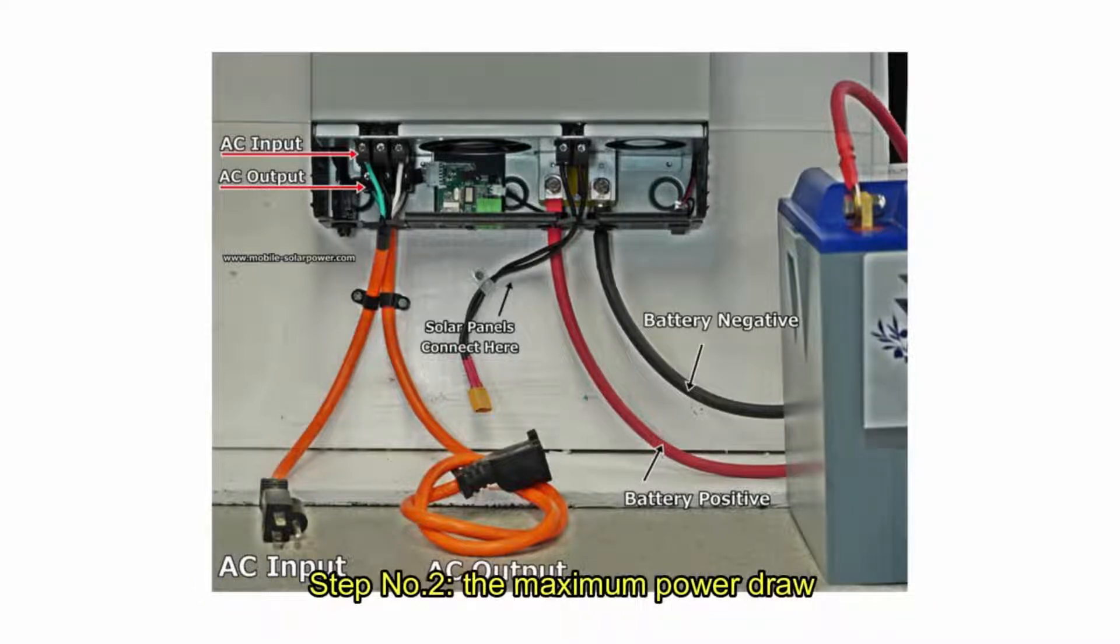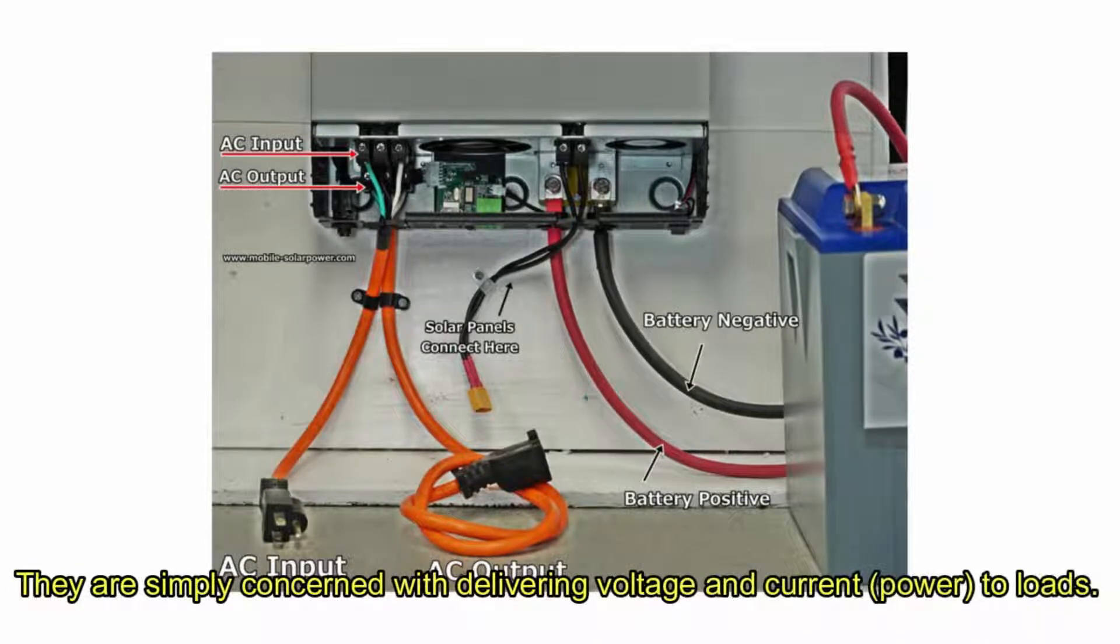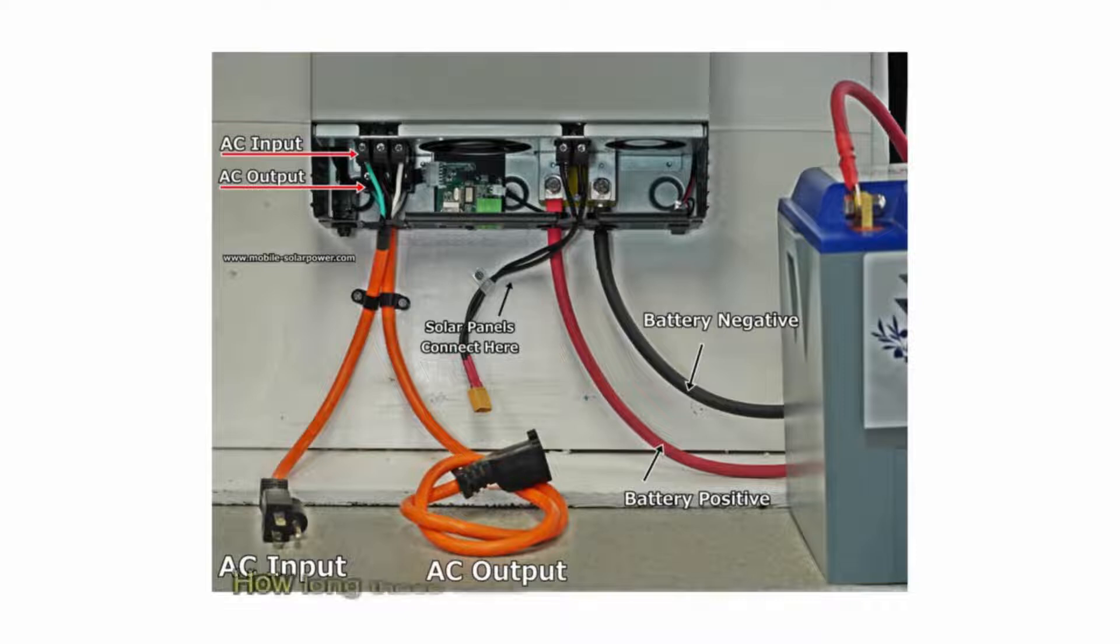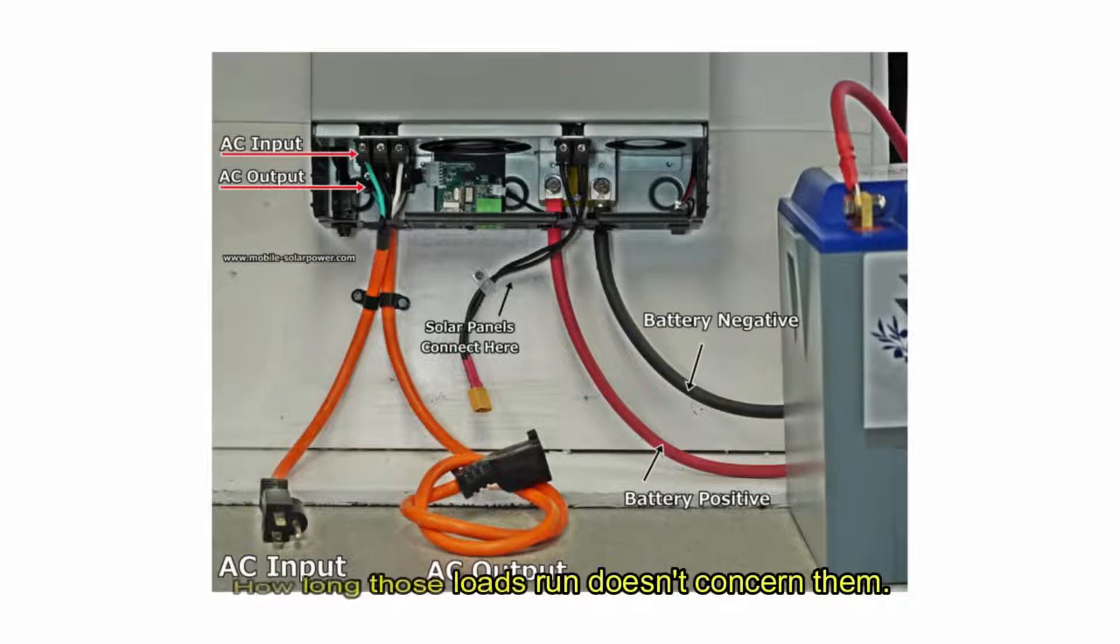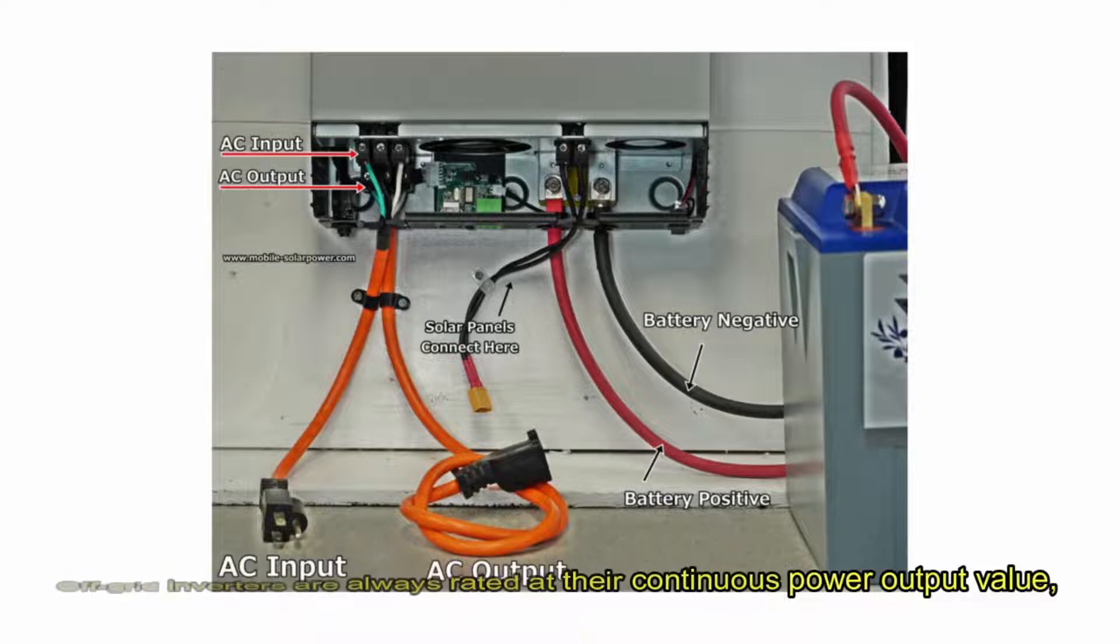Step number two, the maximum power draw. Inverters don't care about energy consumption. They are simply concerned with delivering voltage and current to loads. How long those loads run doesn't concern them. Off-grid inverters are always rated at their continuous power output value.